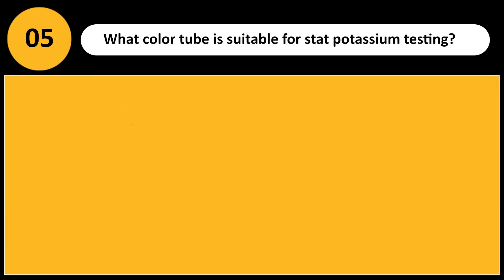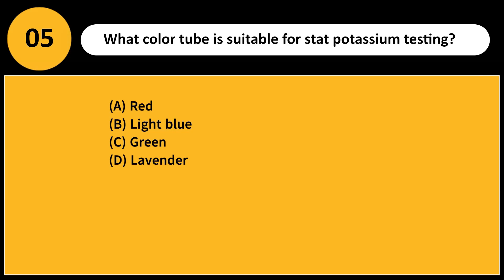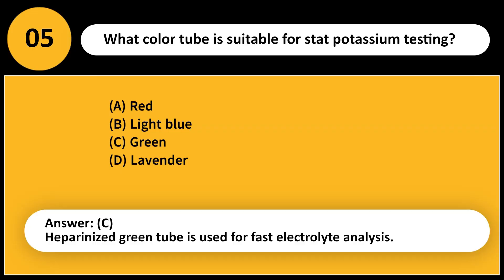What color tube is suitable for stat potassium testing? A. Red. B. Light blue. C. Green. D. Lavender. Answer: C. Heparinized green tube is used for fast electrolyte analysis.